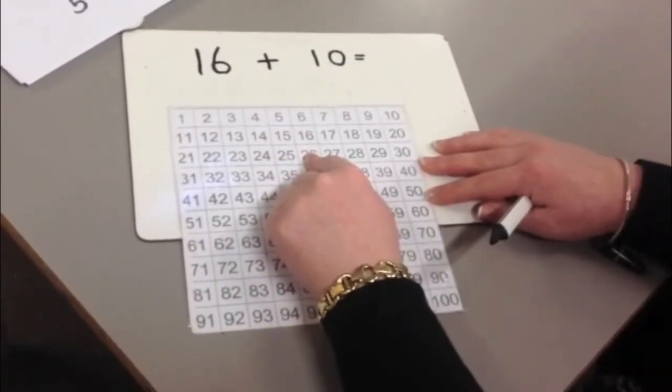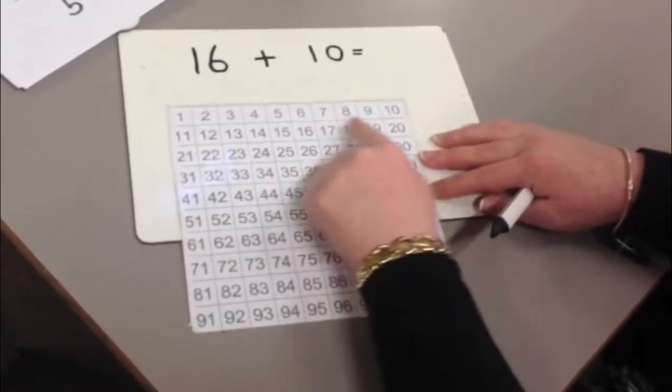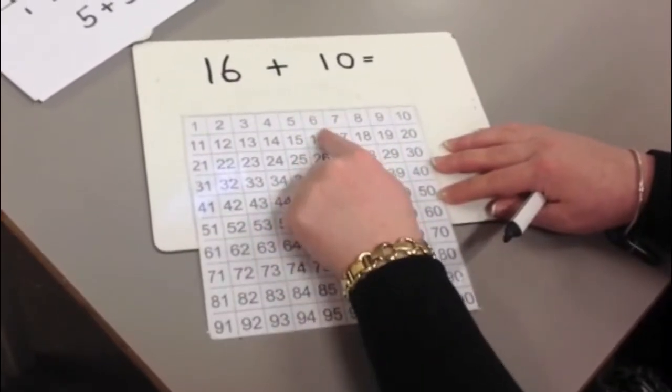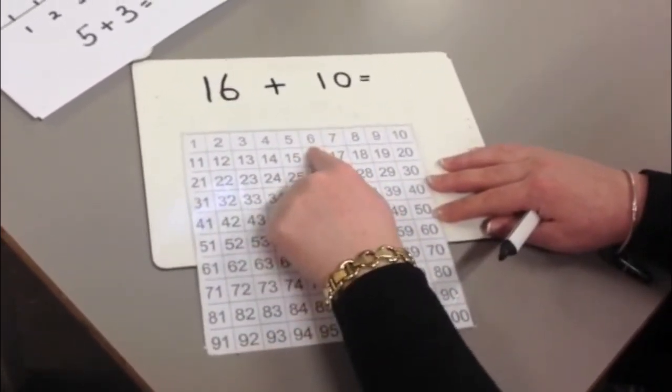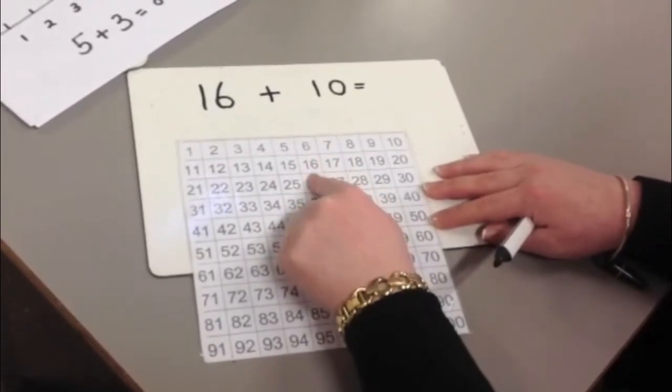That takes a long time, so for 16 add 10, instead of going across 10 jumps, I can go down one jump. So 16 add 10, it would be 26.